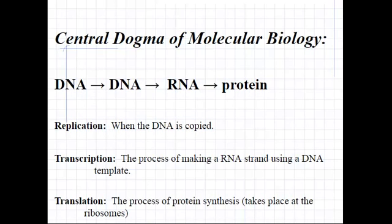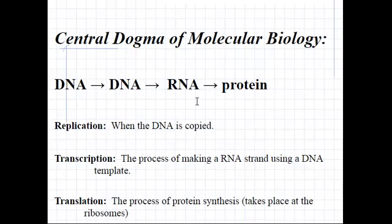Replication is when DNA is copied, so DNA produces more DNA. This has to happen in cells before the process of cell division can occur. Second, we'll talk about the process of transcription. This is when DNA, a template strand, is used to produce an RNA molecule. So when DNA is used to produce RNA, this is the process of transcription. Finally, we'll look at the process of translation. This is when the RNA molecule will be read by a ribosome in order to produce a polypeptide or a protein.